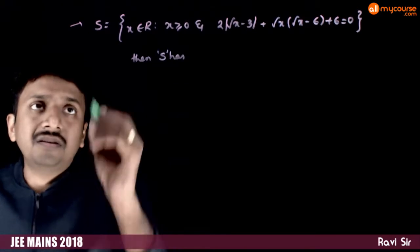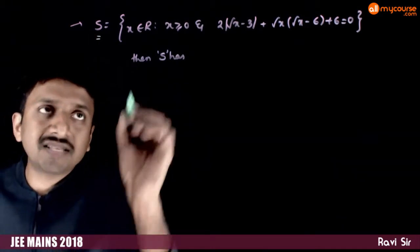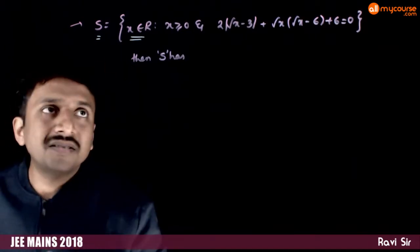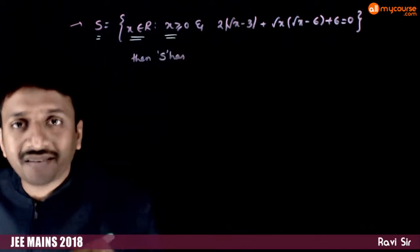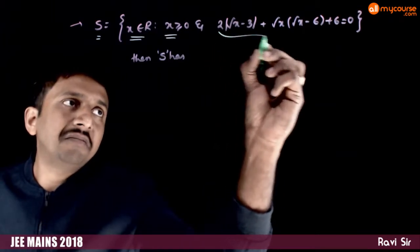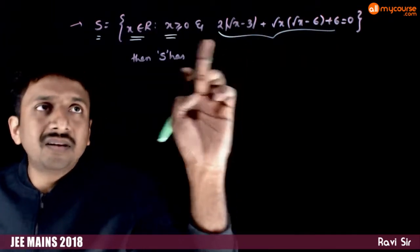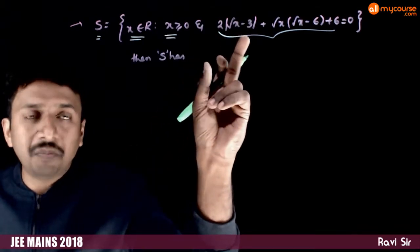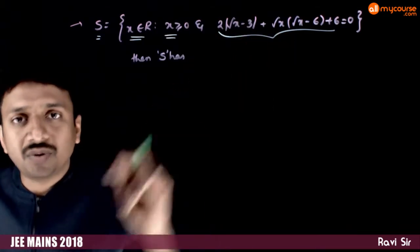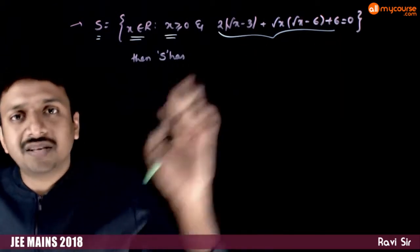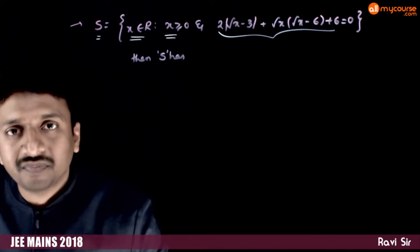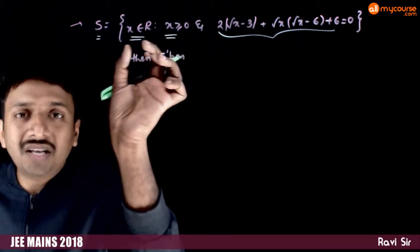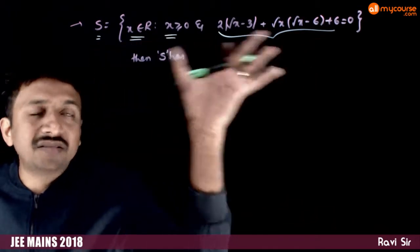In this question, S is a set of real numbers such that x is greater than 0 and x satisfies the equation 2|√x - 3| + √x(√x - 6) + 6 = 0. S contains the positive values of x which satisfy this equation.